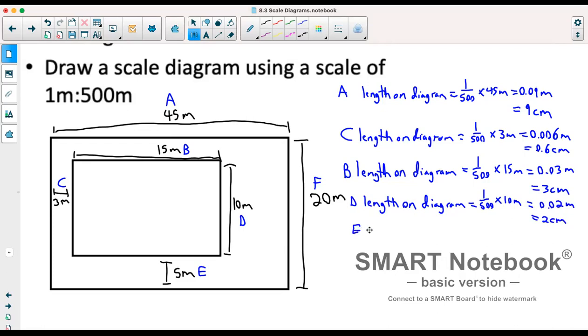Next we have E. So our length on diagram is equal to 1 over 500 times five meters,